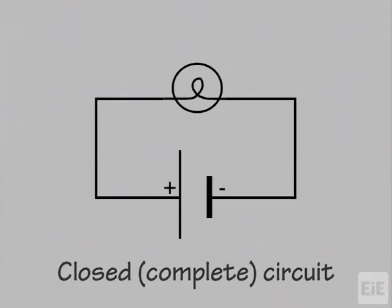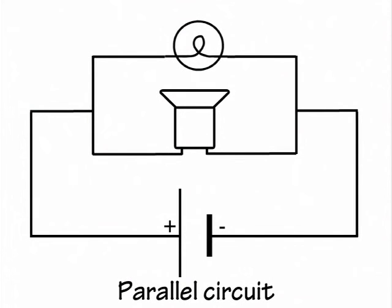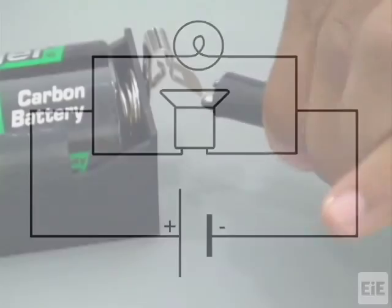Unlike series circuits, parallel circuits contain multiple paths through which electricity can flow. This schematic diagram represents one possible way to make a parallel circuit with a light bulb and a buzzer.